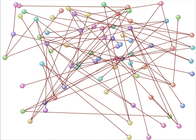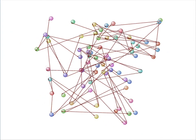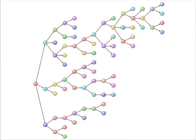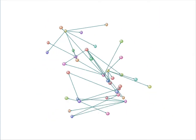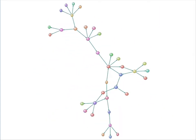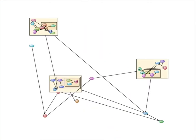The diagrams we just saw were very neatly organized. This was done automatically as a result of applying a technology known as graph layout. Here we see some examples of graph layout being applied to messy diagrams.